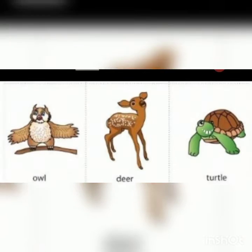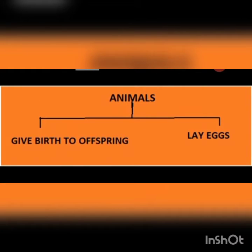All these animals will be reproducing. Animals can be grouped into two: the animals that give birth to offspring, and animals that lay eggs from which an offspring will eventually hatch out. What will happen if animals don't reproduce? There will be no life on earth.